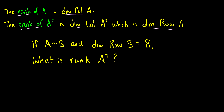If a matrix A is reducible to a matrix B, and the dimension of row(B) is equal to 8, then what is the rank of A transpose? Well, the rank of A transpose is the same thing as finding the dimension of the row space of A. Because row(B) is equivalent to row(A), the dimension of row(A) is 8. So the rank of A transpose will be 8.